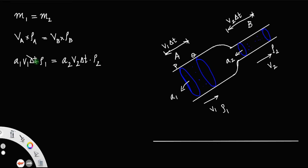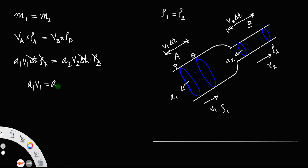We can cancel delta T from both sides. Also, we are considering the case of an incompressible fluid, and for an incompressible fluid the density remains the same, that is rho1 equals rho2, so we can cancel the density terms as well. We then get the equation A1 V1 equal to A2 V2. This is the equation of continuity, and let us call it equation number 1.